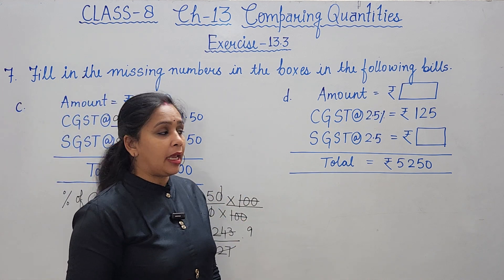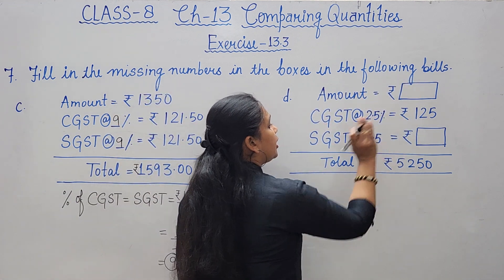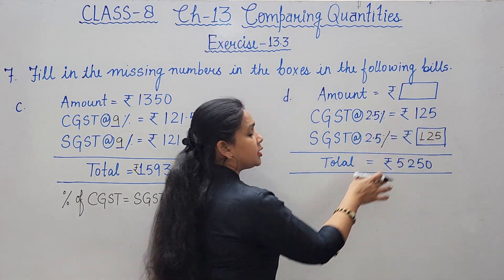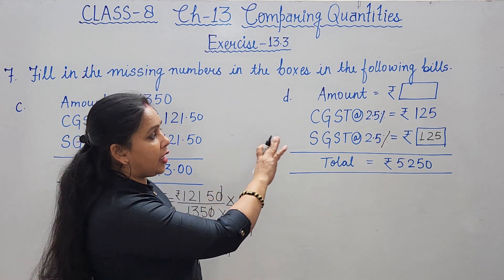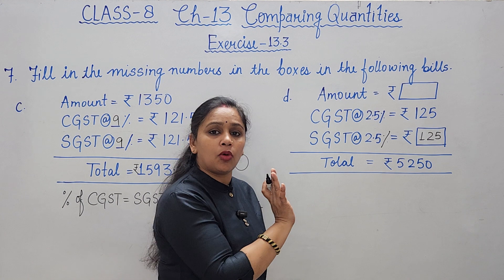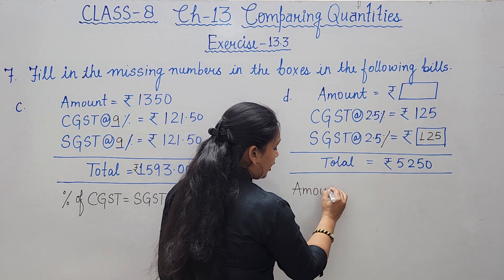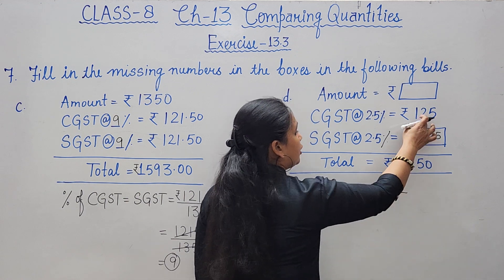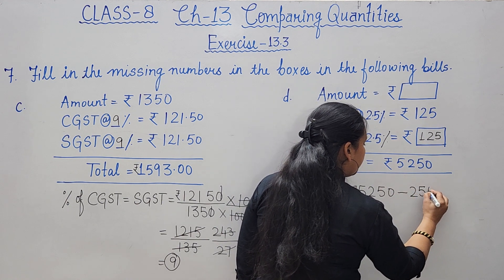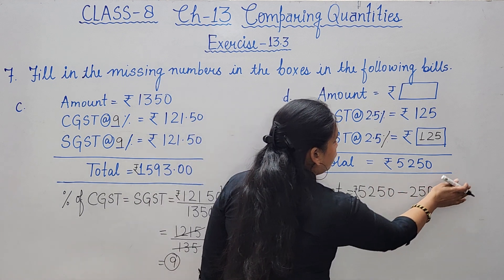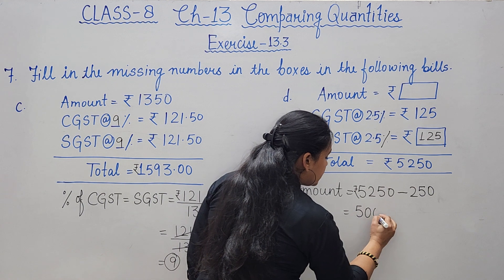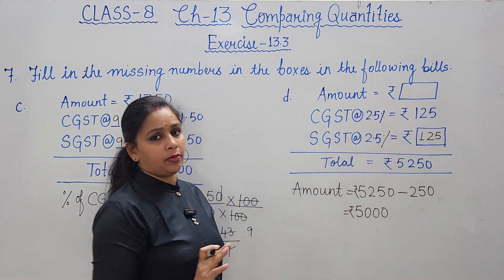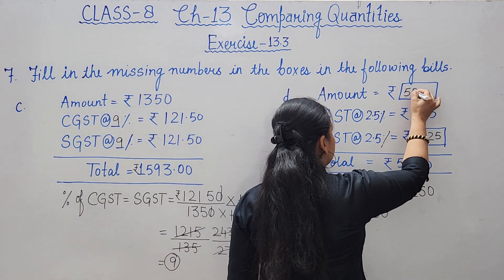Part D: find the amount. CGST = rupees 125, so SGST = rupees 125 as well (both always equal). Total amount given is 5250 rupees. Amount = total minus both GST = 5250 - (125+125) = 5250 - 250 = rupees 5000. So the object's price was rupees 5000.